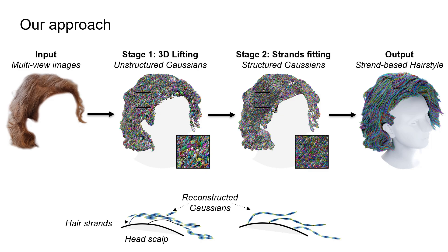During the second stage, we use the renders of the geometry from the first stage to supervise the reconstruction of the structured Gaussians, which now permeate an entire hair volume and are aligned with the hair strands. As a result, because of the duality between the hair strands and strand-aligned Gaussians, we obtain an explicit strand-based hairstyle, which can be directly imported into graphics engines.